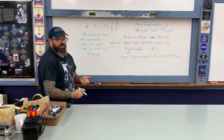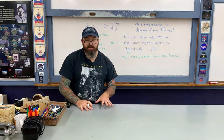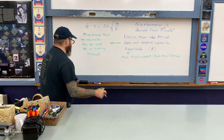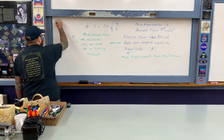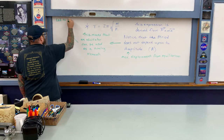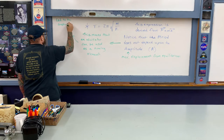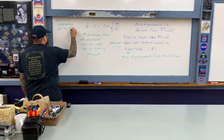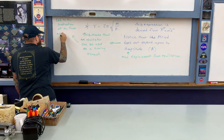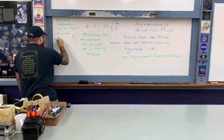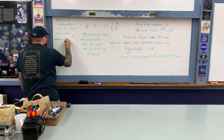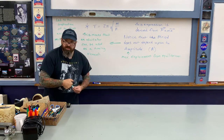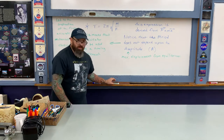When this discovery about oscillations was made in the late 17th century, it led immediately to the construction of the first precise and accurate mechanical clocks. Because the period does not depend upon the amplitude, an oscillator can be used as a timing element, which is why this discovery was so significant.